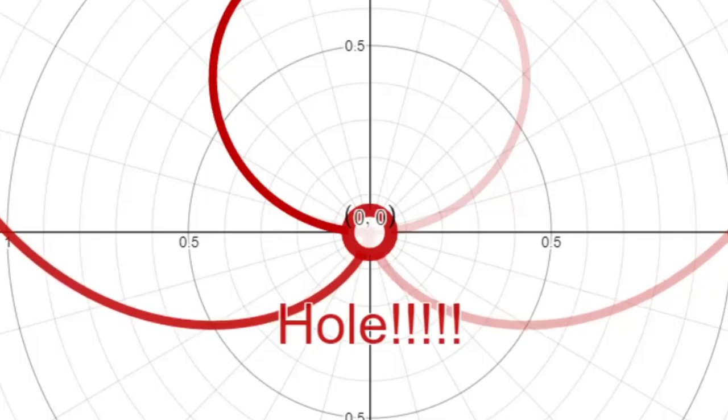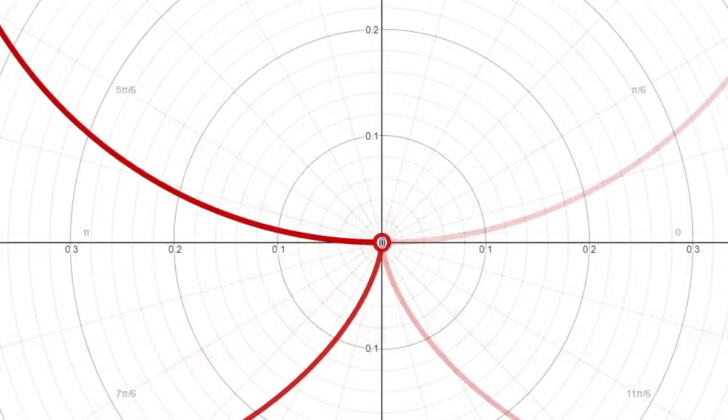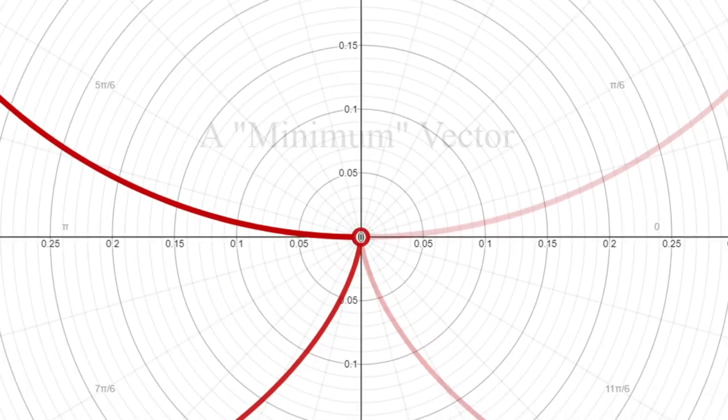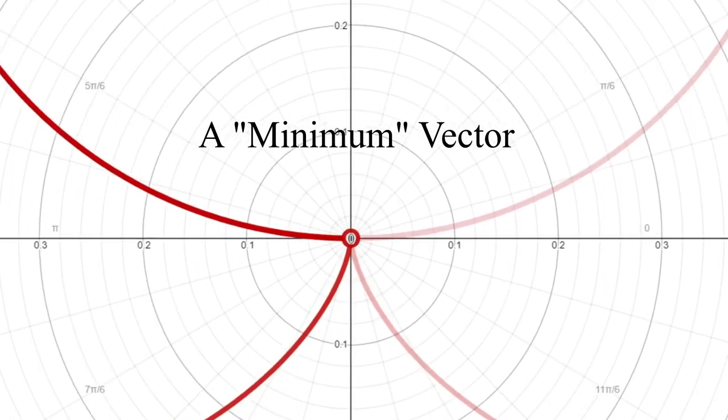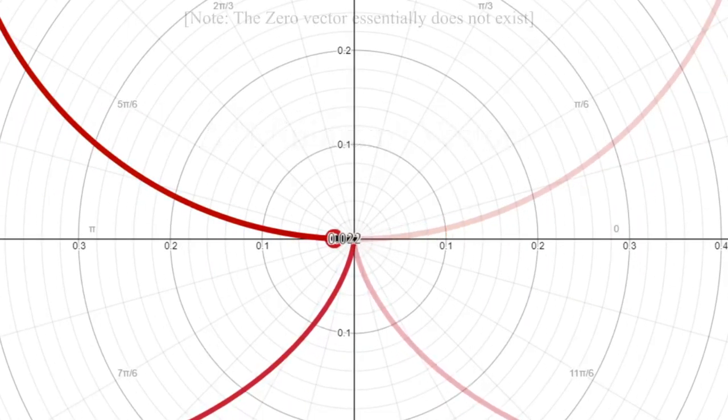But you know what? Even though 0, 0 is a failure of a point, this guy still inherits the pseudo-focus property of having a minimum vector. If all other vectors are drawn, these vectors would be bigger than the 0 vector on 0, 0.